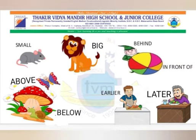Above and Below: The Butterfly is Above The Mushroom. The Snail is Below The Mushroom. Earlier and Later: Ravi cuts the carrots earlier. Later, he eats it.